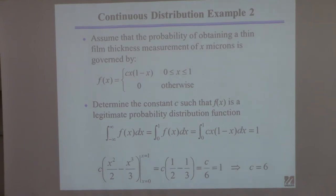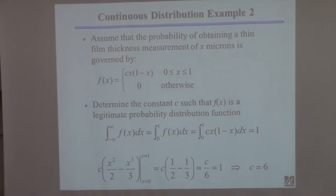So here's a problem I made up for fun. I love thin films, obviously. So I said, what's the probability of obtaining a thin film of a certain thickness is governed by this probability distribution, so x is the thickness. And f of x is the corresponding probability of that thickness. The variable x is in microns.